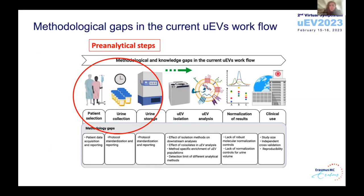The majority of published work starts somewhere where the green arrow is pointing, around the EV isolation. And the majority of work actually describes the effect of different isolation protocols, while patient selection, sample collection, and storage are considered pre-analytical steps in extracellular vesicle research. Frankly, these steps are often seen as less scientifically sexy, and not so rewarding in terms of impact on your publication record — and we all know the motto is publish or perish.